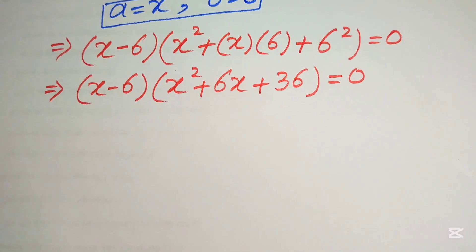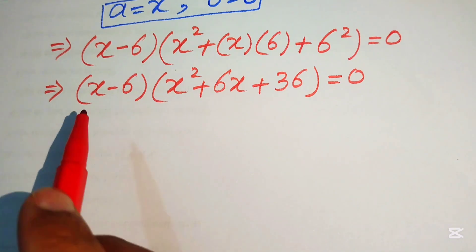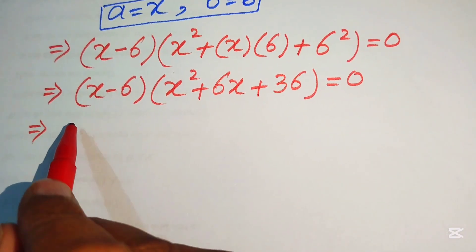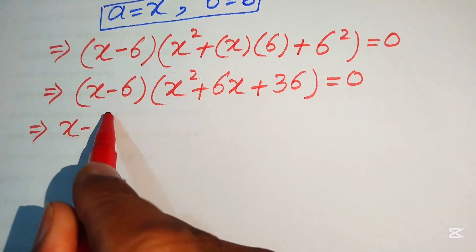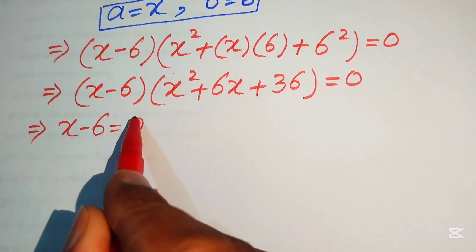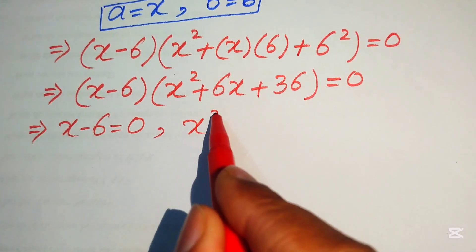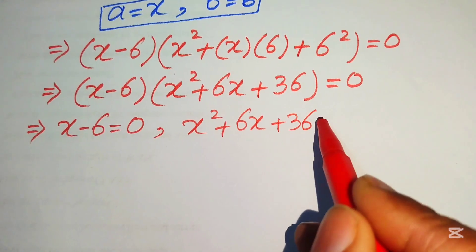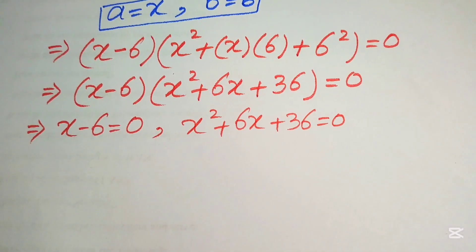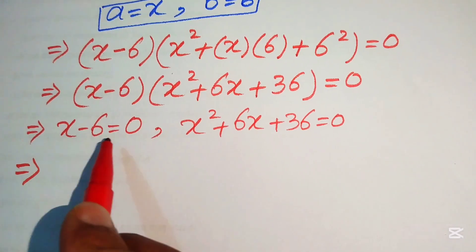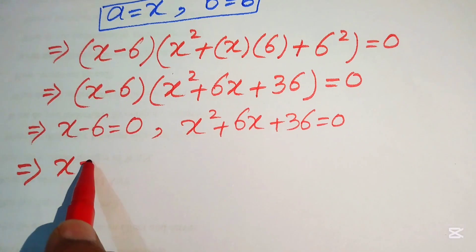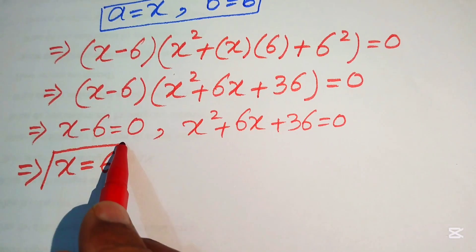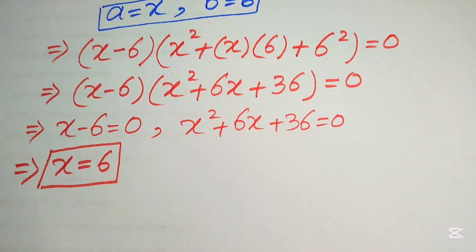We divide this into two cases. Case 1: x minus 6 equals 0, which gives us x equals 6 as our first real root.